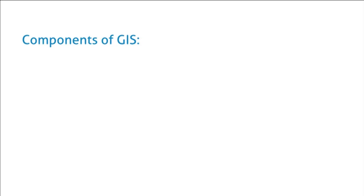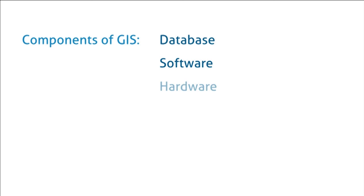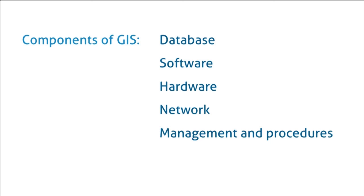The components of GIS include the database, which is the information and data behind your maps that you're using for your analysis; the software that runs the database and understands your inputs and outputs — in this case we're using ArcGIS; the hardware, the actual computer that runs the software; the network of computers where you get your data from; the management procedures for how you collect and analyze data; and the people who do the analysis.